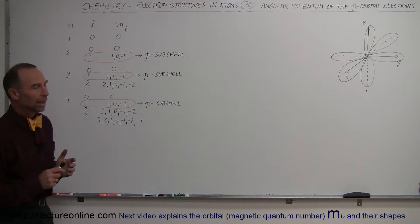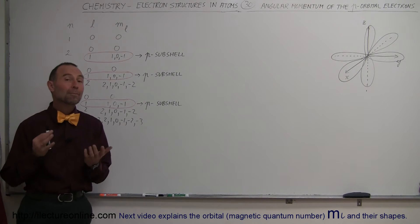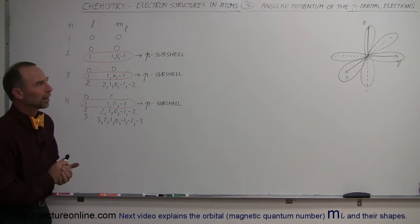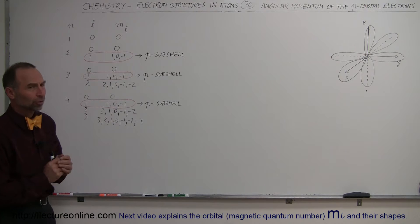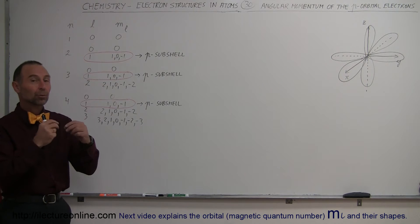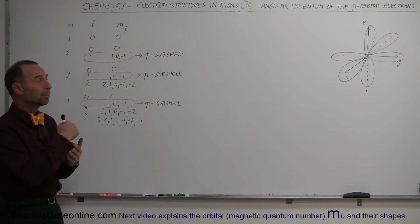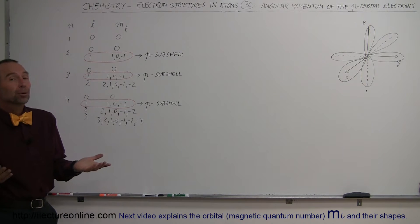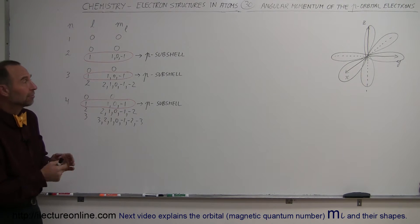We are going to take a look at the angular momentum of the p-orbital electrons — in other words, the electrons that will be found in the p-orbitals. Where are the p-orbitals and how are they found?